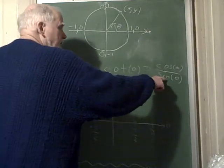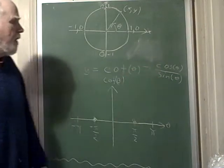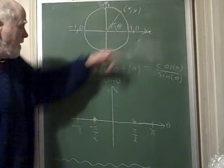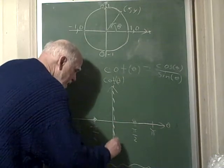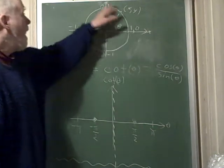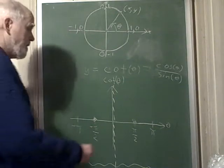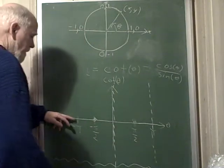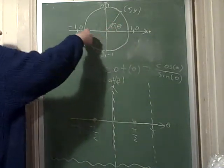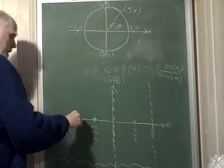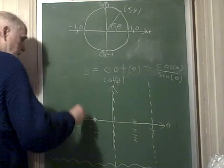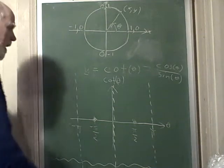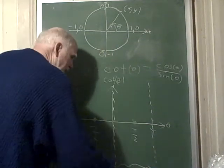Whenever the sine is zero, the cosine is going to be 1 or negative 1, so the cotangent is going to be undefined and we have a vertical asymptote. The sine is zero at 0, so there's a vertical asymptote there, and at pi the sine is zero so there's a vertical asymptote there. Also at negative pi the sine is zero, so the cotangent is undefined and we have a vertical asymptote there as well.